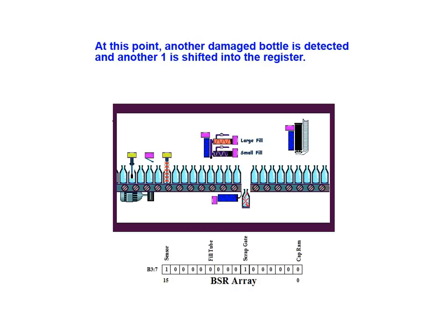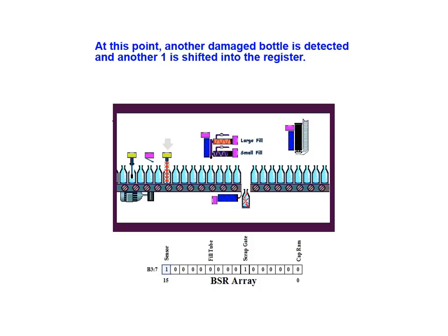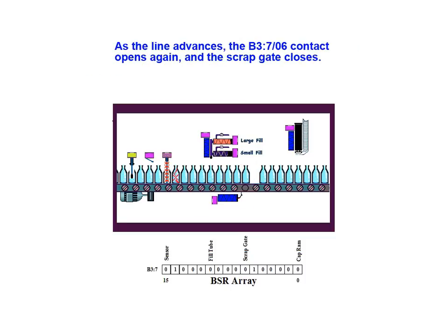At this point another damaged bottle is detected and another 1 is shifted into the register. In addition, a normally open contact having address B37-bit 06 is located on the scrap gate rung, and as the contact closes the gate opens, dropping the scrap bottle. As the line advances, the B37-bit 6 normally open contact opens again and the scrap gate is closed.